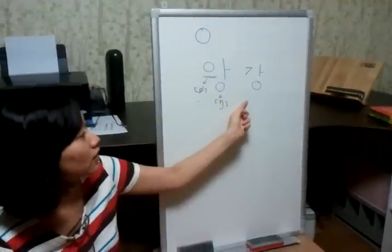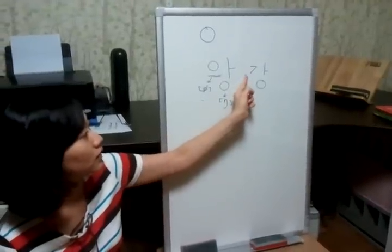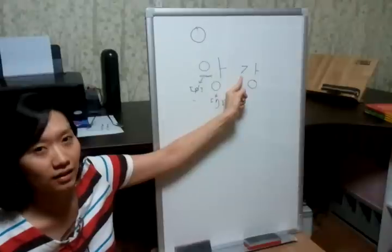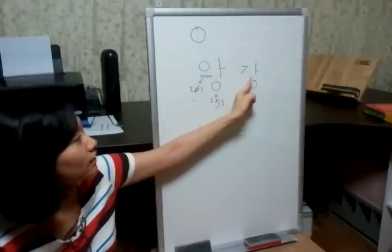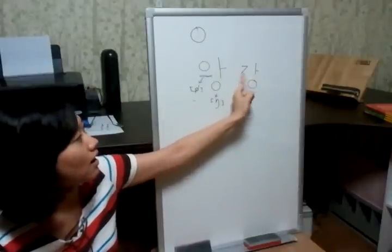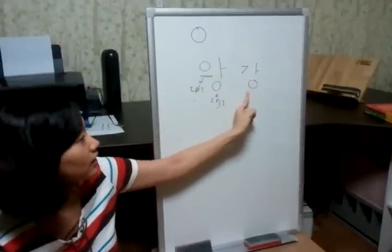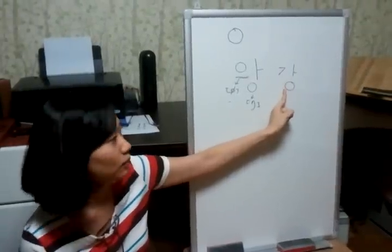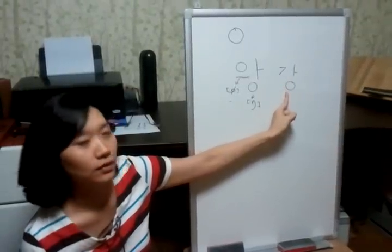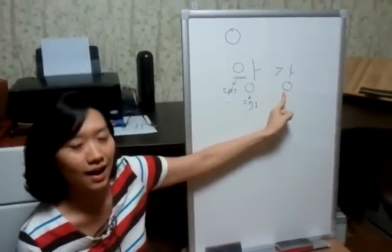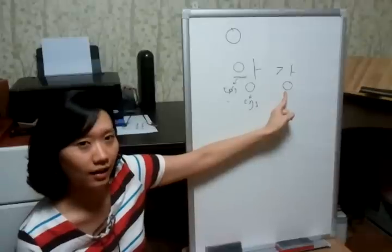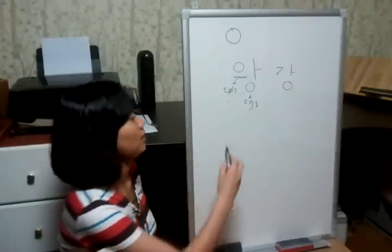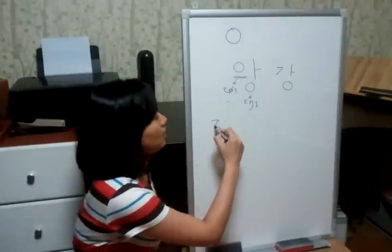Let me show you another example. Consonant 가, 그 sound, plus 아, making 가, and ending consonant 음. So it says 강. 강.